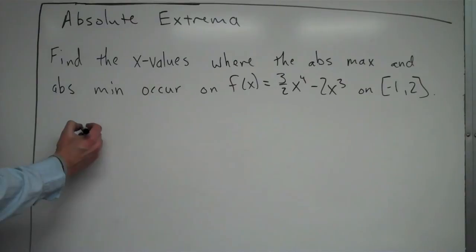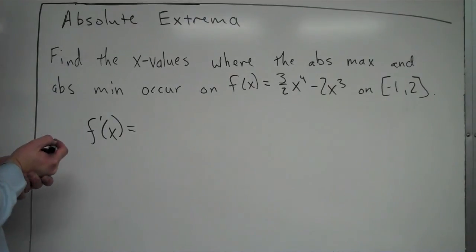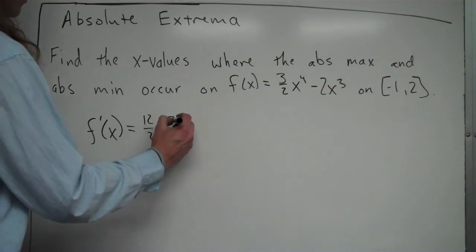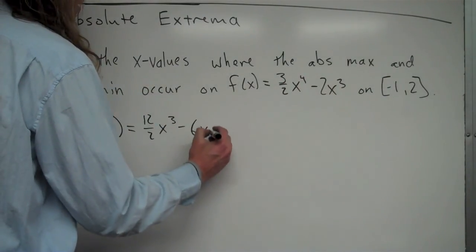We start by finding the derivative. f'(x) equals, bringing the 4 down and multiplying 4 times 3/2, that's 12/2, x³, minus, bringing the 3 down times 2, 6x².